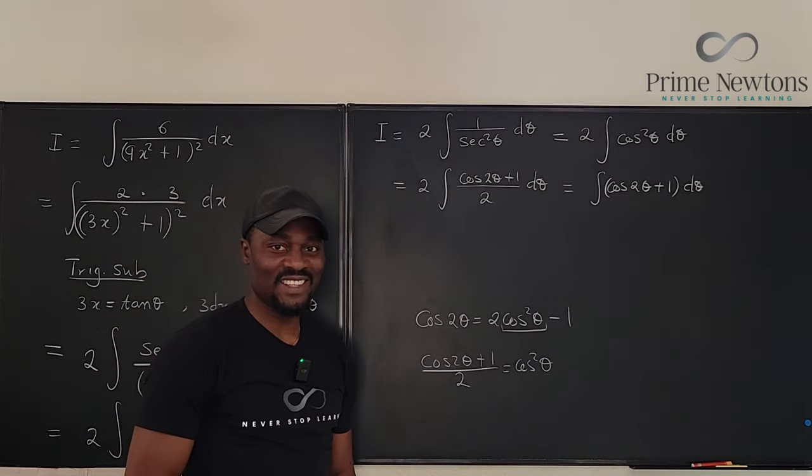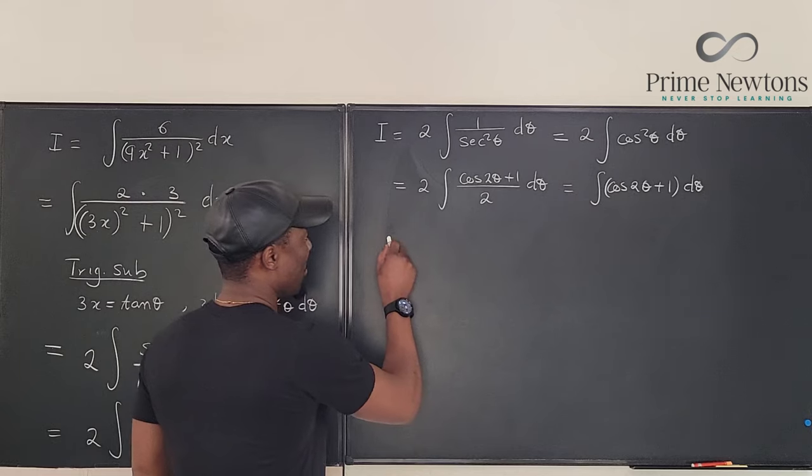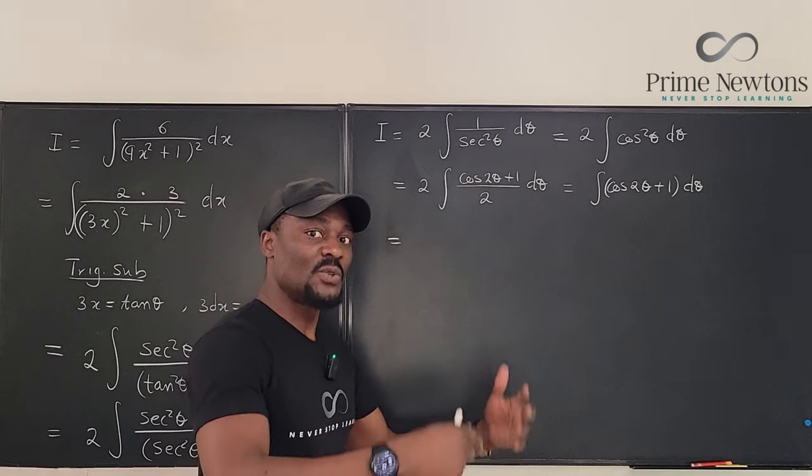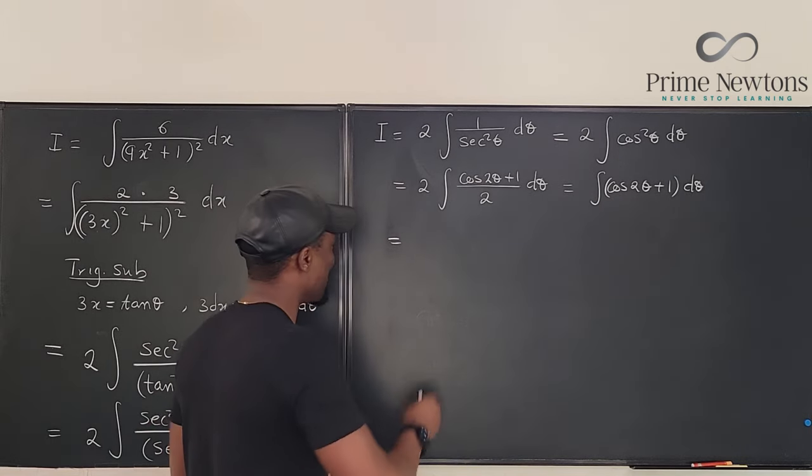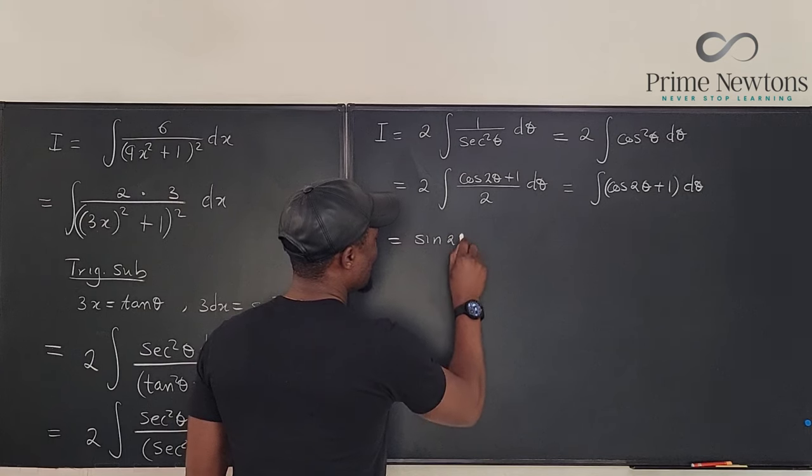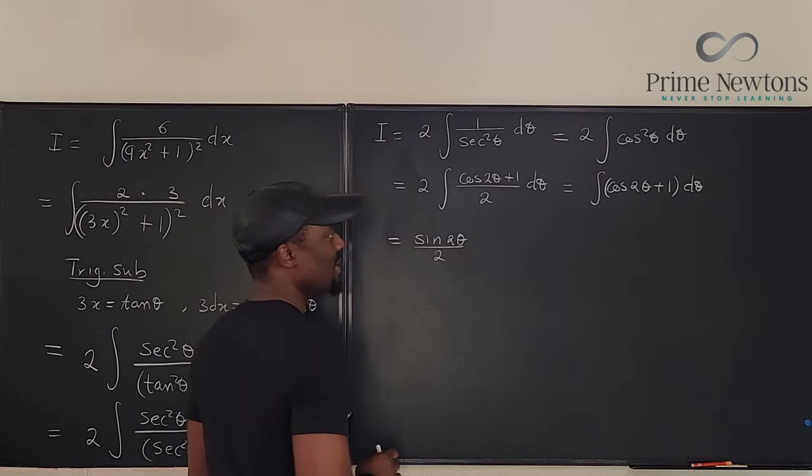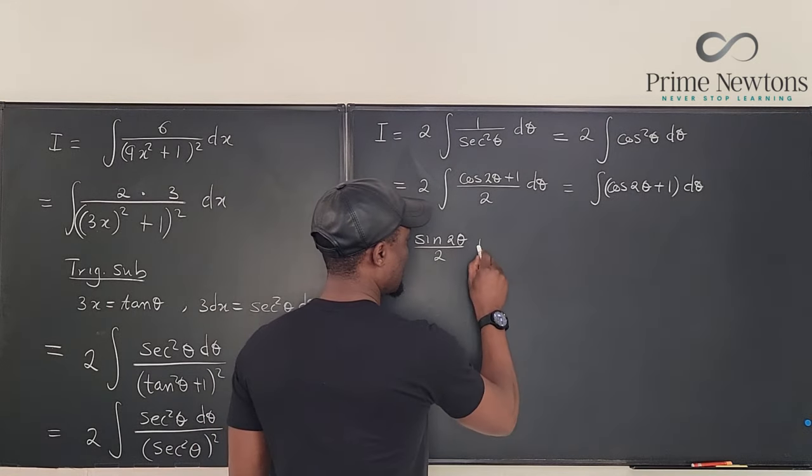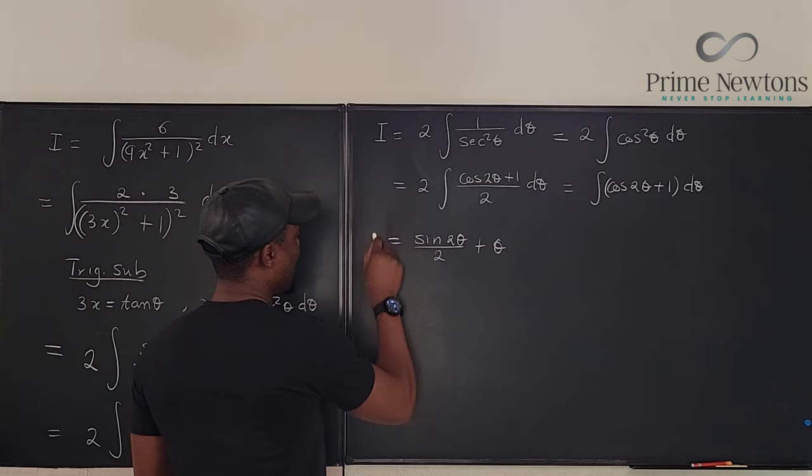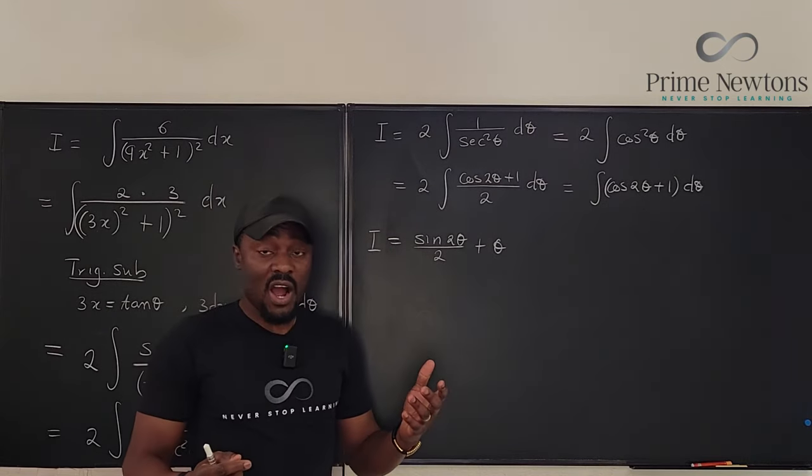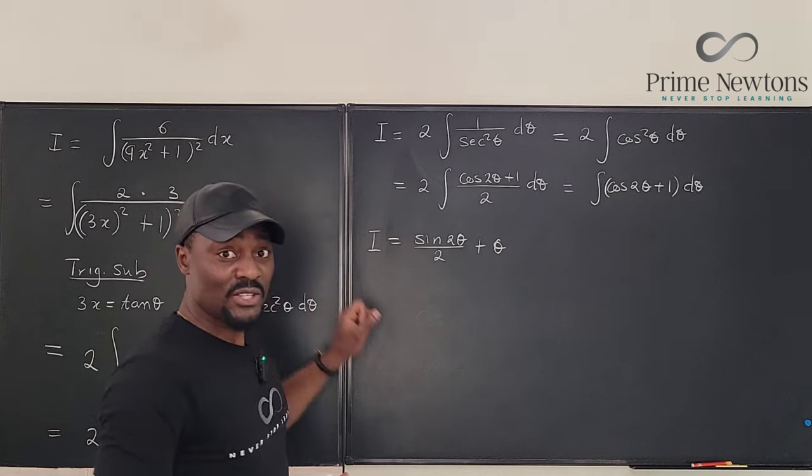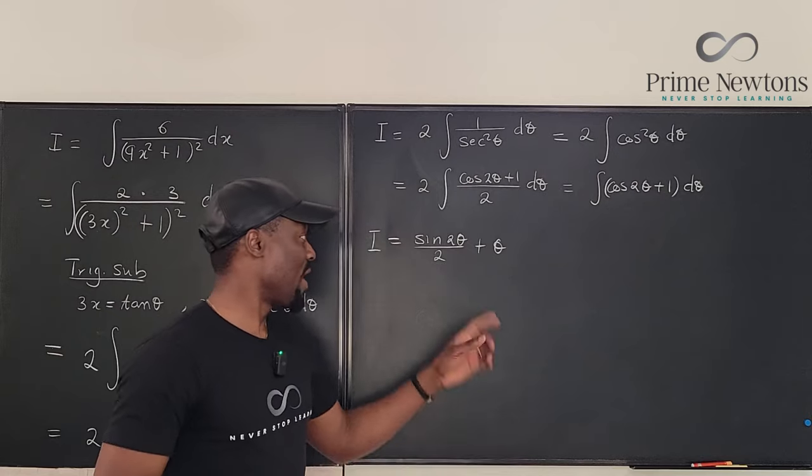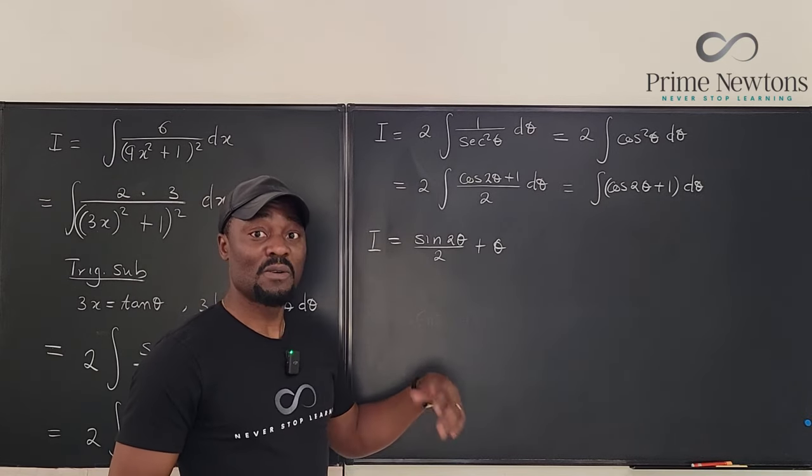And that we know how to integrate. From here we just integrate. If we integrate cosine 2 theta we're going to get sine 2 theta divided by 2. And if we integrate 1 d theta we're going to get just theta. And if our variable of integration from the beginning was theta this is the final answer. But we know it is not. We have to take it back to x.